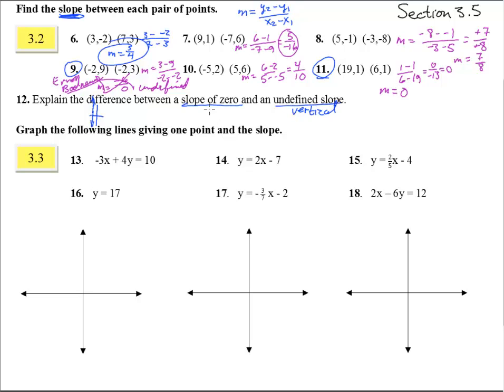Over here, if you were to do a little graph of that one, 19 comma 1 and 6 comma 1, you can see that these guys are horizontal.